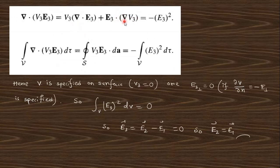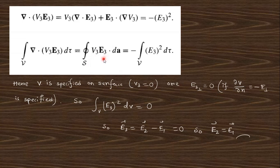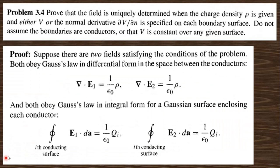Since ∇·E₃ = 0, that term vanishes, and with ∇V₃ = −E₃ the integrand becomes −E₃². After integrating, V₃ or E₃ perpendicular on the boundary can be specified; if either is zero on the surface, the integral equals zero, forcing E₃ = 0 everywhere. This means E₁ = E₂ — the two initially assumed different electric fields are in fact identical, proving uniqueness.